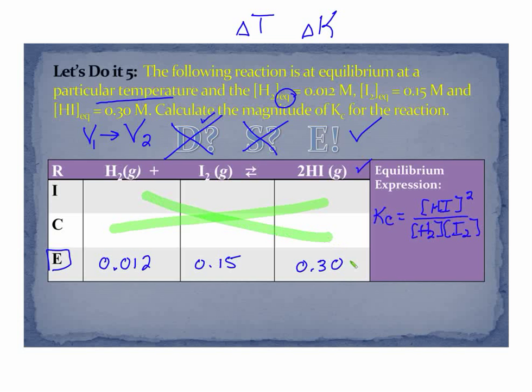In this case, there was no reason to use the first part of this. We are asked for Kc, and as soon as we have our E row filled in, we can plug into Kc. If we plug those values in to this equilibrium expression, you should get Kc is equal to 50. It'd be 0.3 squared over 0.012 times 0.15.